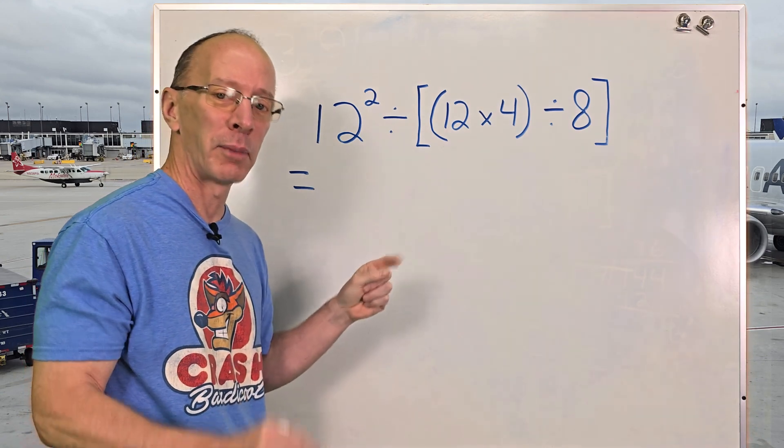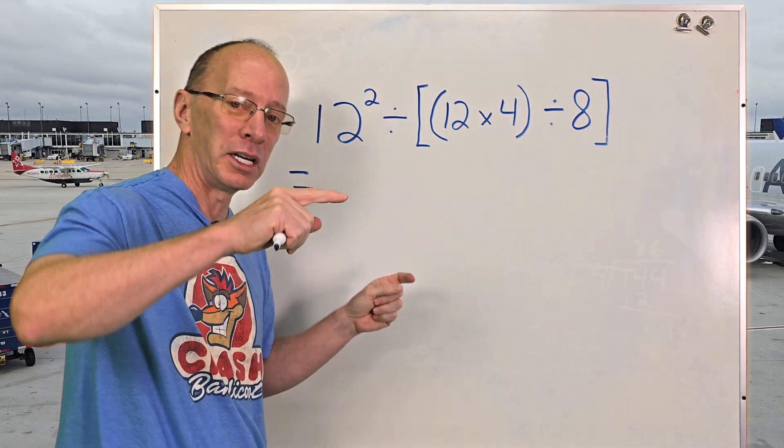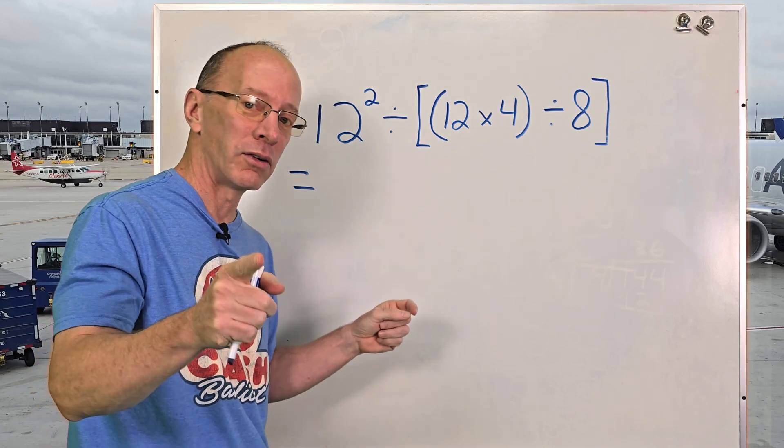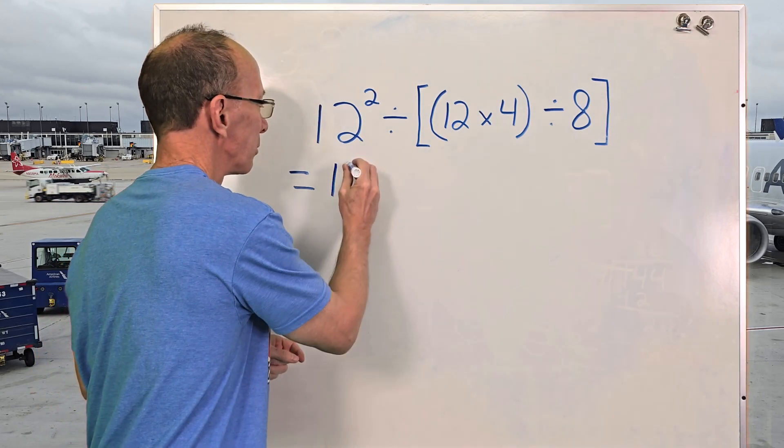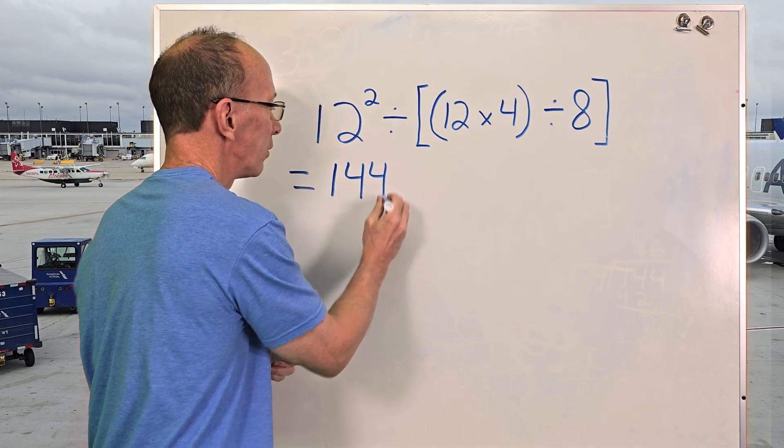So 12 to the second power means 12 times 12, which equals 144. So I'm going to put 144 right here.